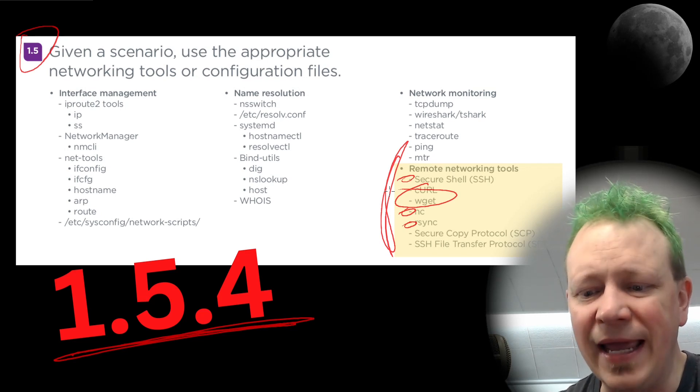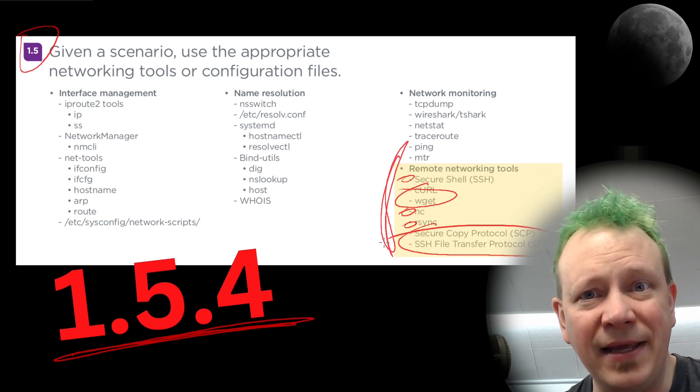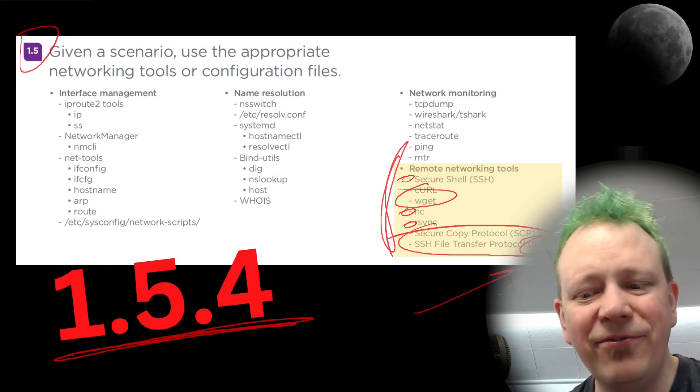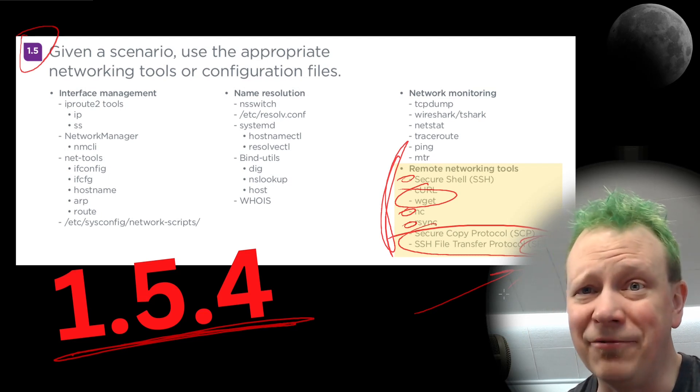CURL and WGET both do similar things but in a slightly different way. I also want to talk about the difference between Secure Copy and SFTP. Both tools are generally used to get information from the web to your local command line — they're command line tools to get stuff. WGET, or WebGET, is specifically for fetching files from the web — HTTP or HTTPS. You can send some stuff with POST commands with WGET, but it's generally a retrieval thing. You can get files and also download entire websites.